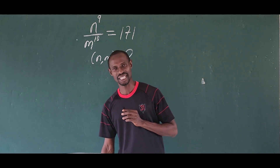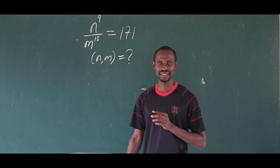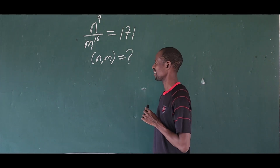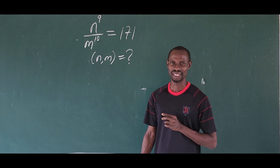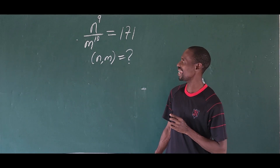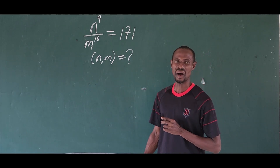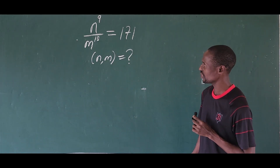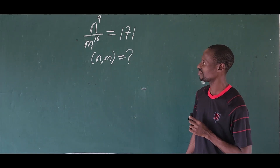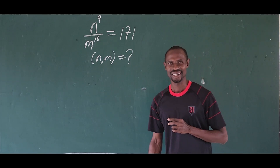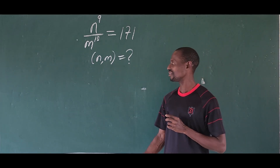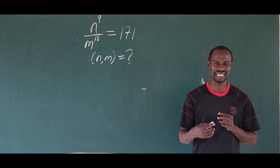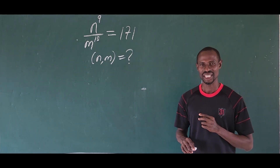Hello and welcome to today's math class. Today we have this challenge before us. The question is n to the power of 9 all over m to the power of 10 equal to 171. What is the value of n and m that will actually satisfy this challenge?